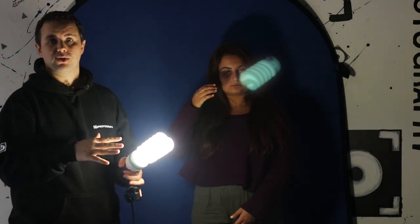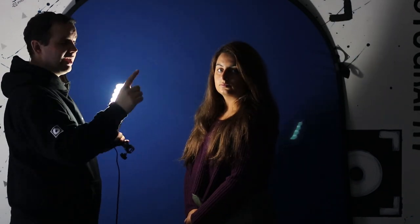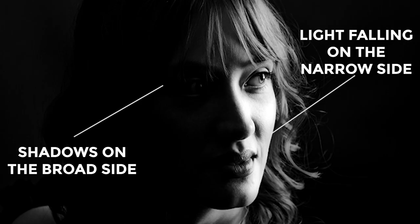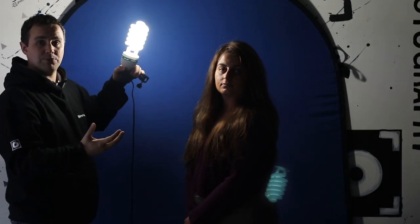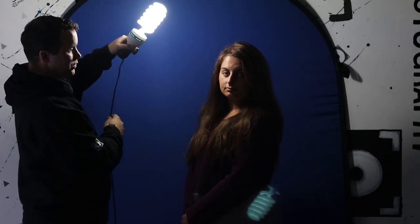Next up we have narrow lighting, which is completely opposite to broad lighting. Bear in mind the position of the subject — Harriet is turned side-on with one side of her body closer to the camera than the other. Whereas with broad lighting the light is in front, this time we've got it behind her, illuminating what is known as the narrow side of the face. The light is again at a 45 degree angle pointing downwards. A lot of these portrait lighting setups, especially with a hard light, look really good in black and white.